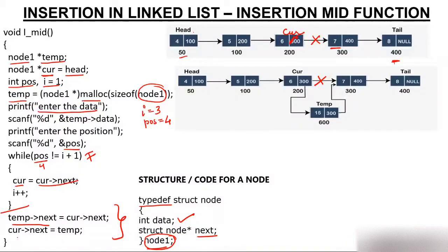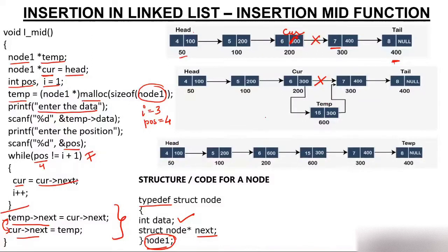I request you to try reversing these two statements as homework — if you do current->next = temp first, you will not be able to insert the node correctly. Finally, the result is: 4, 5, 6, 15, 7, 8 — node 15 is successfully inserted at the fourth position. You can also insert at the second or third position using the same function, just not at the beginning since we have a separate function for that. This is all about how to insert at any particular position.